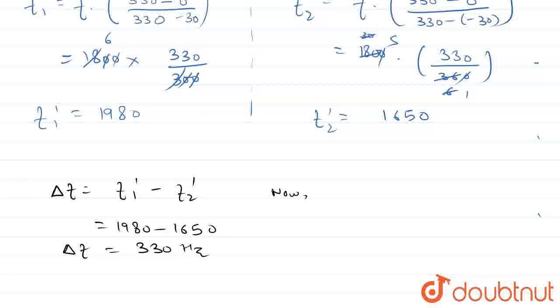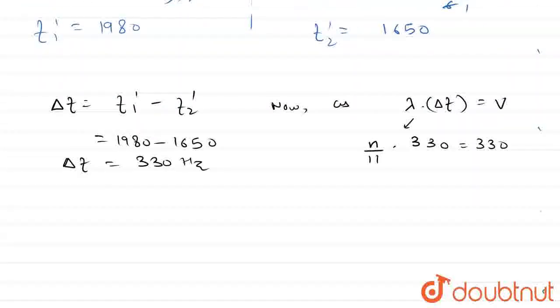now as lambda into delta f would give us the velocity, so lambda is given as n upon 11, into delta f is 330, is equal to velocity which is also 330. Using this relation we get n upon 11 into 330 is equal to 330. These cancel, n is equal to 11. This is our answer. Thank you.